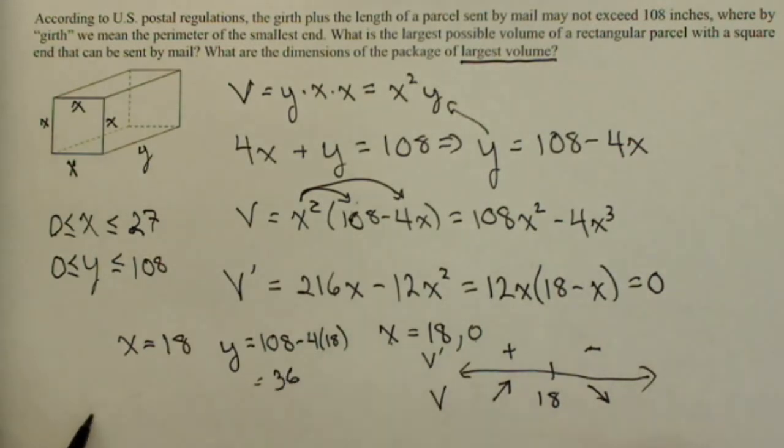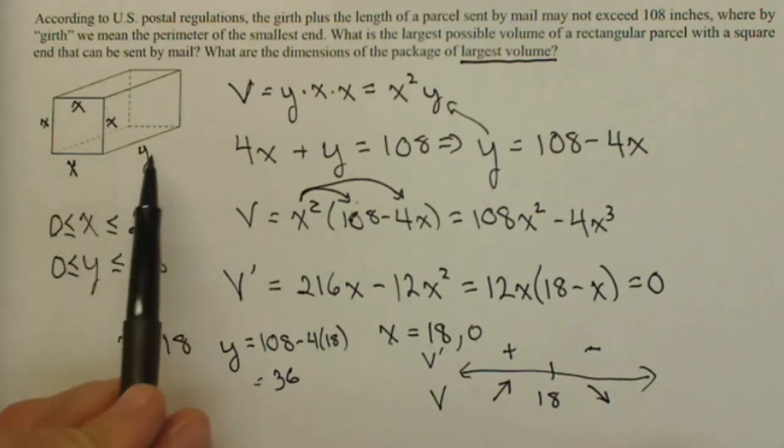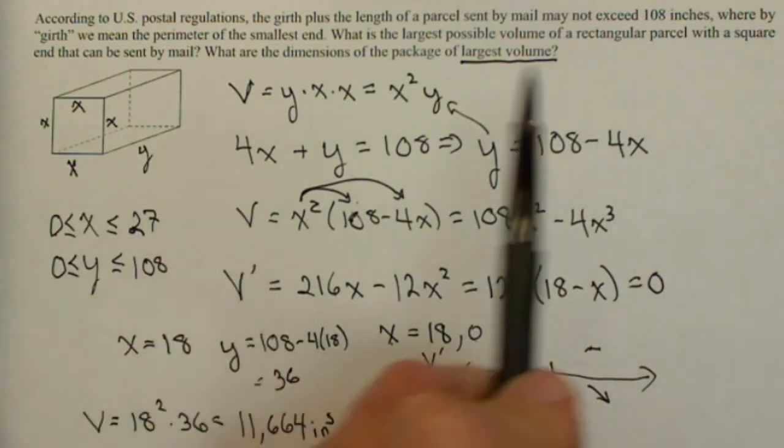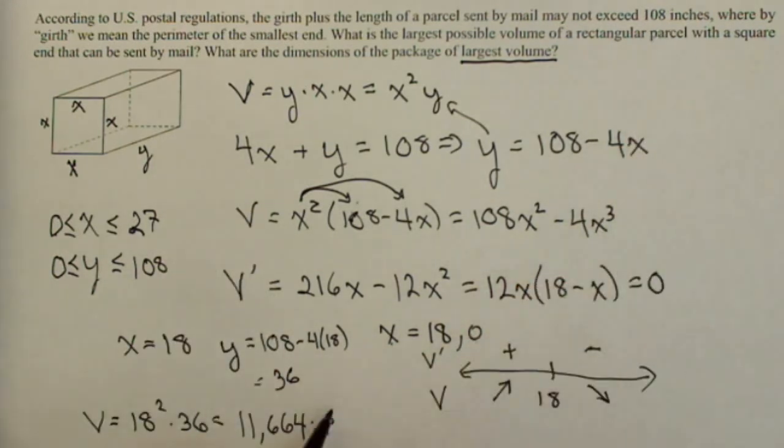So our maximum volume, so if we were asked for the dimensions, it's 18 by 18 for the girth, and then 36 for the length. And since this problem asked us for the volume, it's going to be 18 squared times 36 for which we get 11,664 cubic inches. Notice our whole problem, the 108 was in inches, so this whole problem was worked in inches. So we don't want to forget our units.